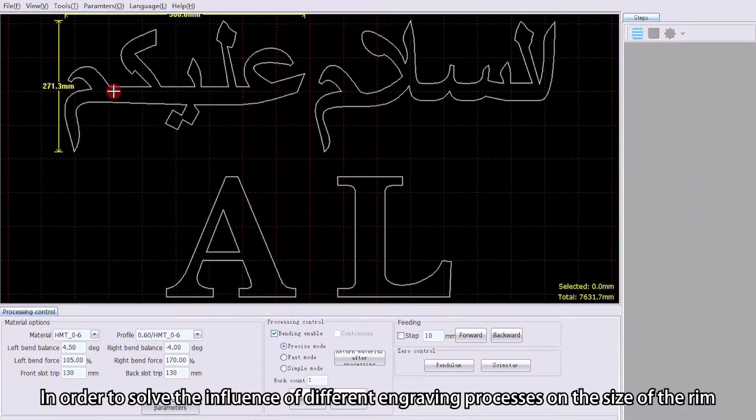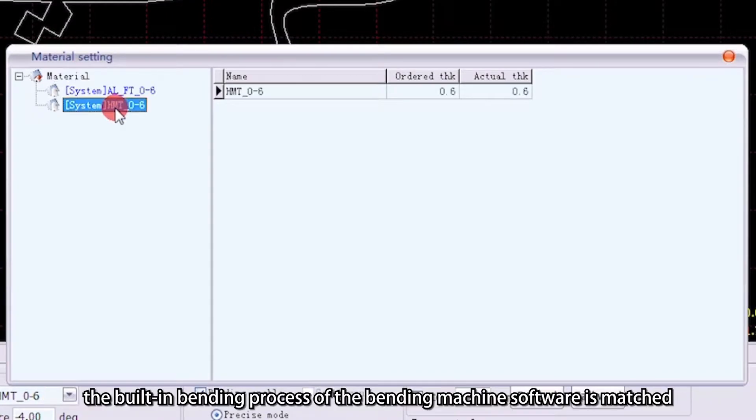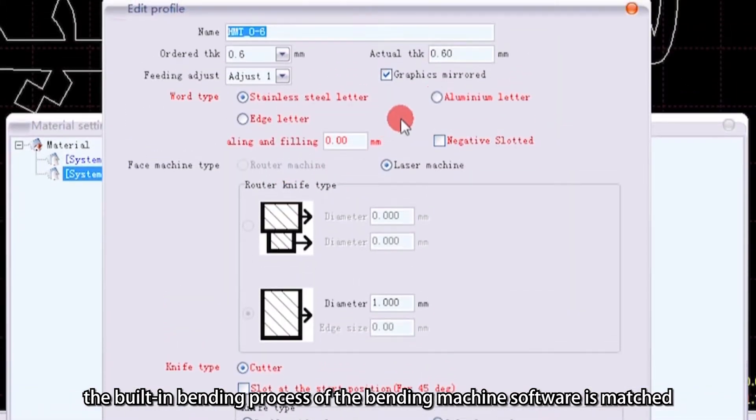To show the influence of different engraving processes on the sides of the rim, bending machine software is matched.